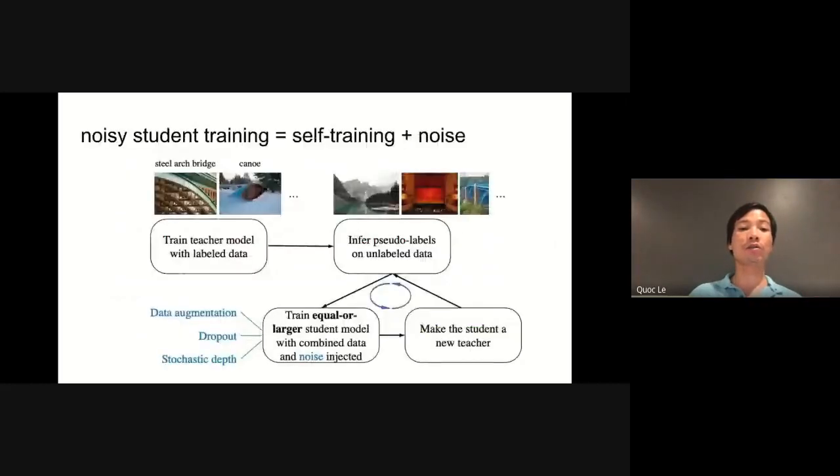This figure summarizes our noisy student training method. First, we train a teacher model with labeled data. The model is then used to infer pseudo-labels on unlabeled images downloaded from the internet. Next, we train a larger student model on the combined data with noise injected, such as data augmentation, dropout, or stochastic depth. After the student is trained, we make it the new teacher and iterate the process to generate new pseudo-labels, train a new student, and so on.